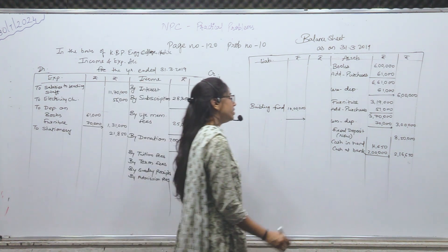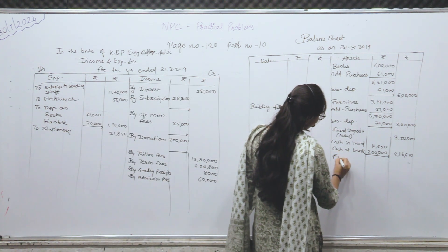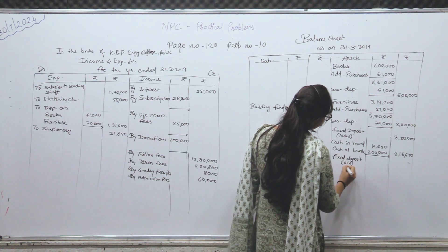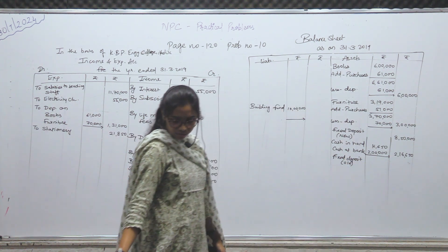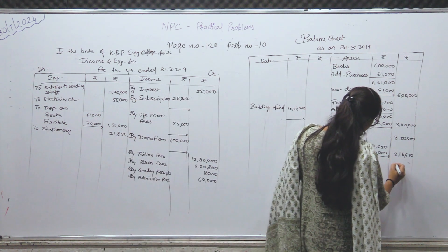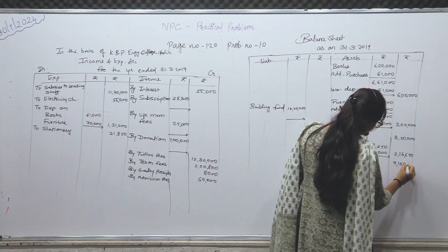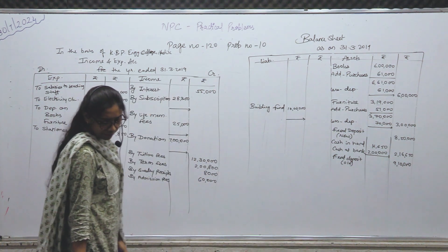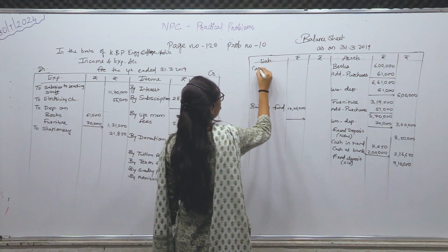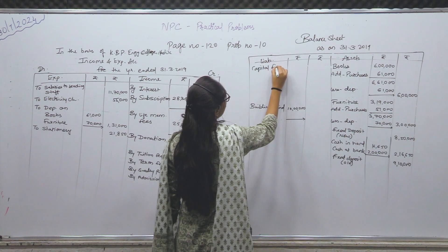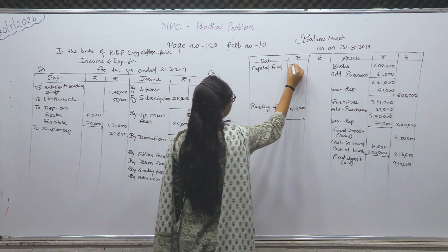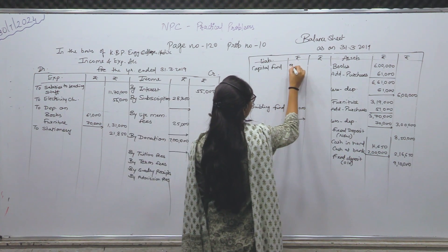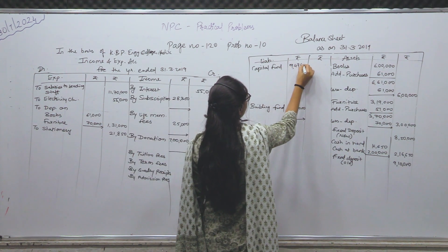Next is fixed deposit — asset में लिखोगे। Fixed deposit — पुराने वाले old fixed deposit — कितने के हैं — 9 lakh 10,000 — outer में: 9,10,000। Next — capital fund दे रखा है — liability में लिखो शुरू में। Capital fund — amount: 9,47,400।